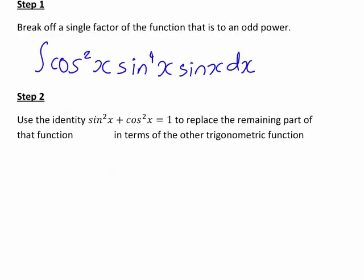The second step is to use the identity sine squared x plus cos squared x equals 1 to replace the remaining part of that function that we've broken up. So in this case to replace sine to the power of 4x in terms of the other trigonometric function, which in this case means we want to write it in terms of cos x.